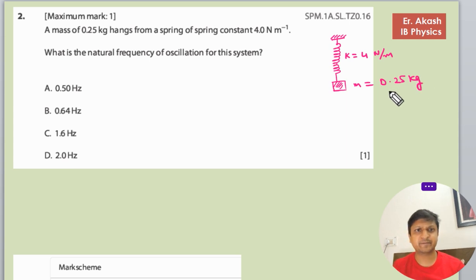We have to find the natural frequency. The frequency is 1 by T, and the formula for T is 2π root of m/k. So first we will calculate T and then we will find the frequency.